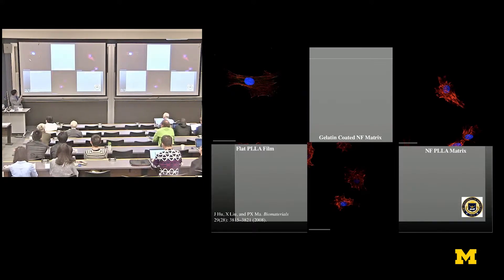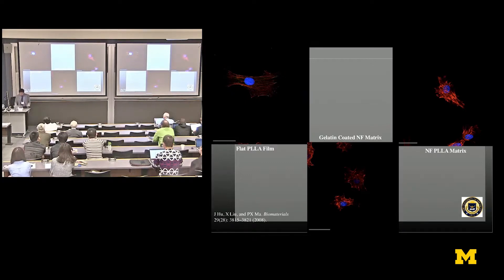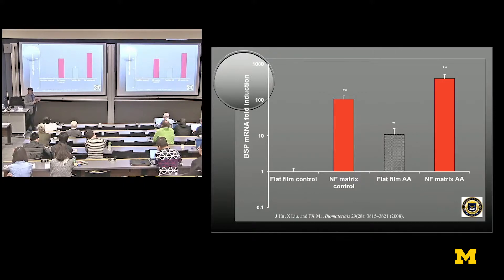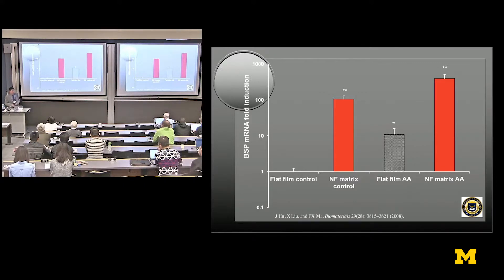Another student found those proteins indeed affect cell adhesion. Cells on a flat surface stretch differently than on nanofiber structures — they have a different morphology. Furthermore, those different morphologies lead to different gene expression levels. A very important osteogenic marker gene showed expression levels on nanofibers that were 100 times higher than on flat surfaces — the exact same polylactic acid polymer material, but the nanofiber structure made gene expression go up 100 times.